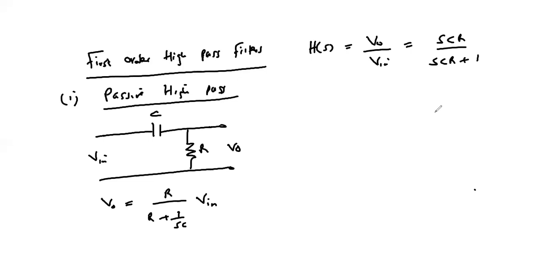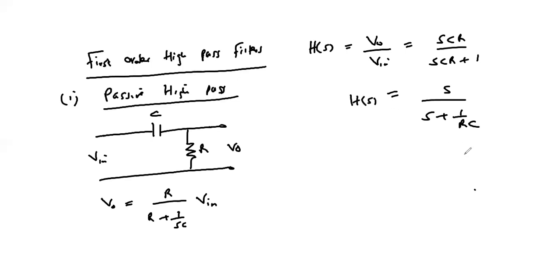We wish to make the coefficient of the highest power of s in the denominator equal to one. Therefore we divide by RC on both the numerator and denominator, and our transfer function can be written as s over (s + 1/RC). This is the transfer function of the simplest first-order high pass passive filter.